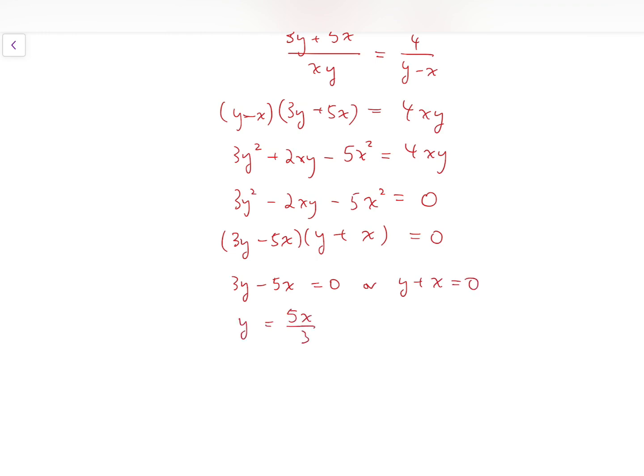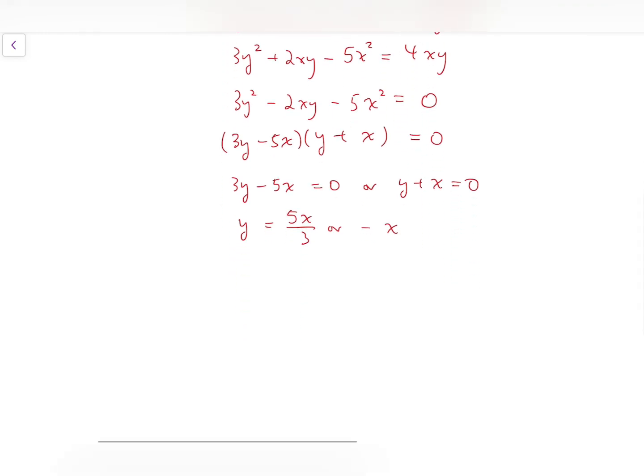So either y equals 5x over 3 or minus x. But since y and x are both lengths of some line segments, they must be positive. So one cannot be negative of the other. So I have to reject the minus x case.